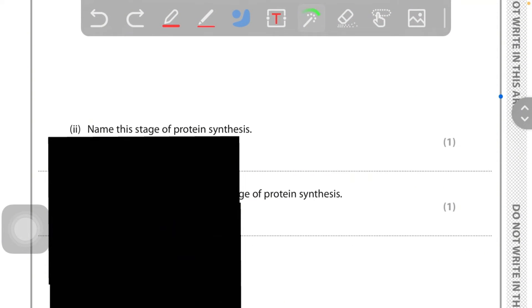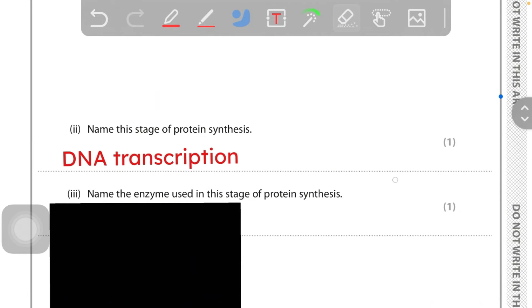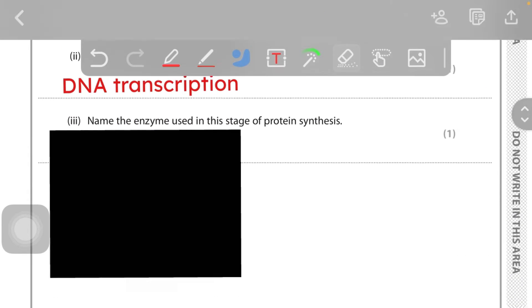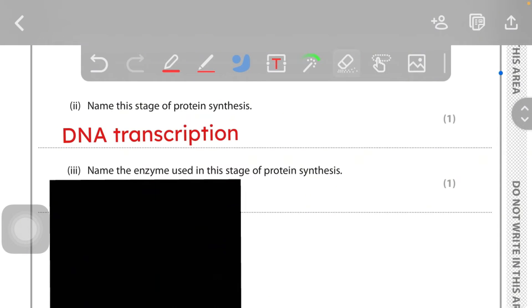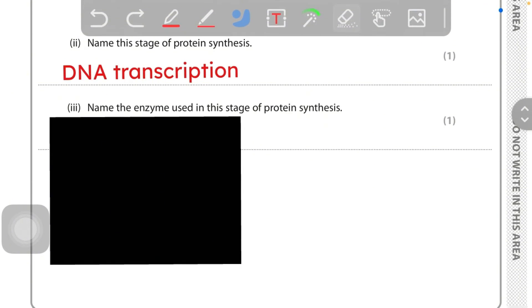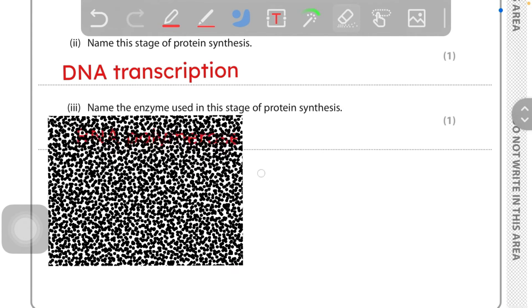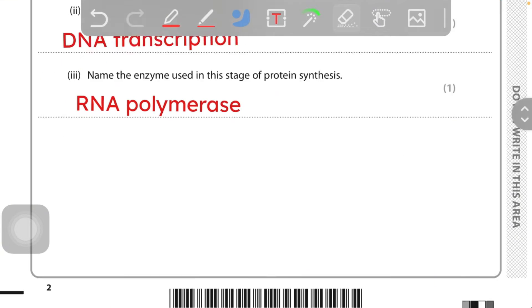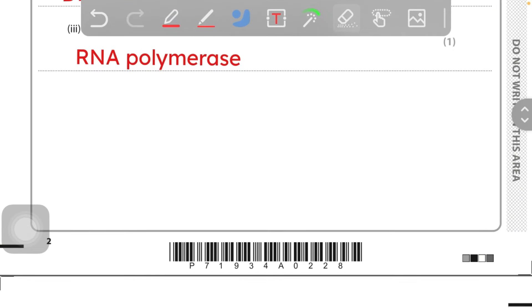DNA transcription. Name the enzyme used in this stage of protein synthesis - the enzyme used in this stage is RNA polymerase, not DNA polymerase, because mRNA is made.